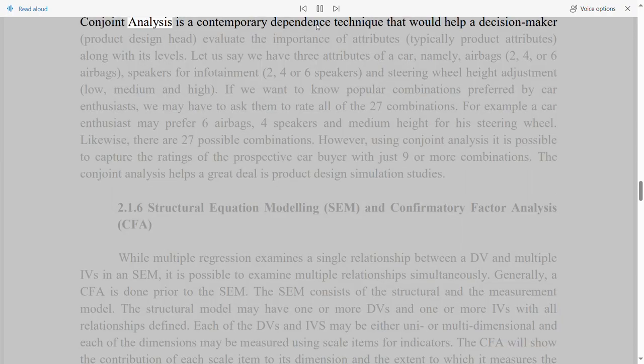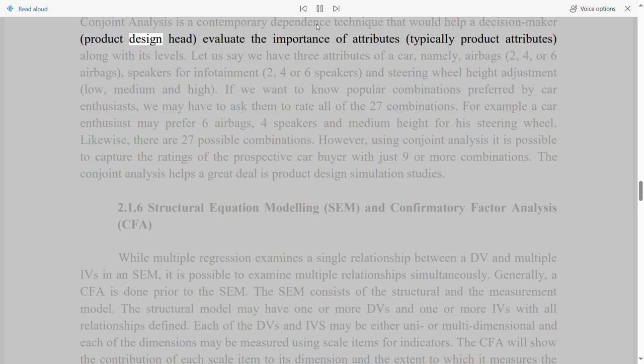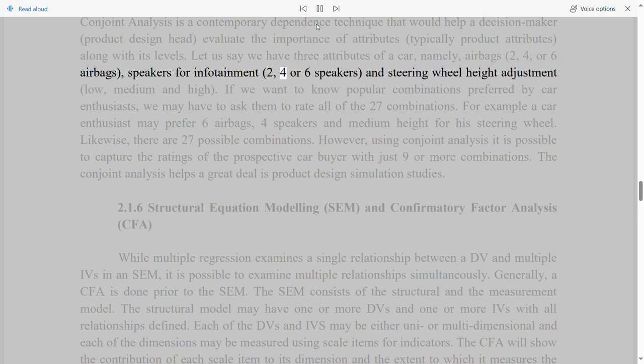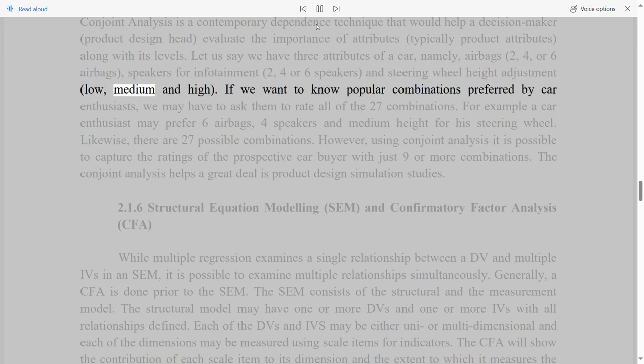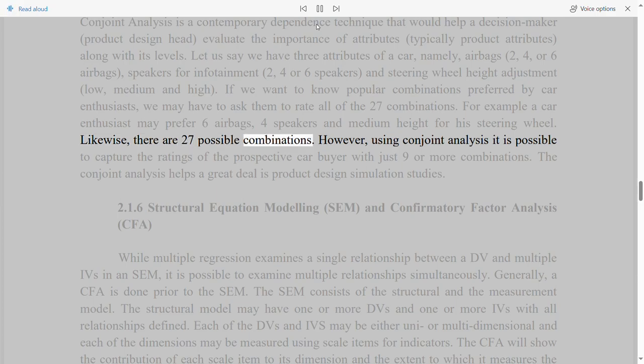Conjoint analysis is a contemporary dependence technique that would help a decision maker, product design head, evaluate the importance of attributes, typically product attributes, along with its levels. Let us say we have three attributes of a car, namely airbags (2, 4, or 6 airbags), speakers for infotainment (2, 4, or 6 speakers), and steering wheel height adjustment (low, medium, and high). If we want to know popular combinations preferred by car enthusiasts, we may have to ask them to rate all of the 27 combinations. For example, a car enthusiast may prefer 6 airbags, 4 speakers, and medium height for his steering wheel. Likewise, there are 27 possible combinations. However, using conjoint analysis, it is possible to capture the ratings of the prospective car buyer with just 9 or more combinations. The conjoint analysis helps a great deal in product design simulation studies.